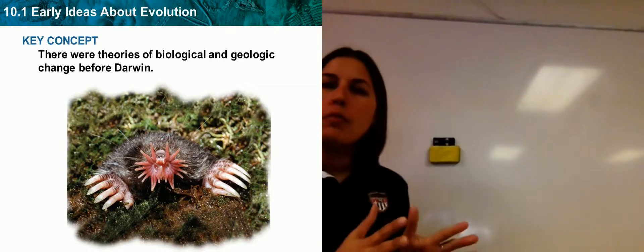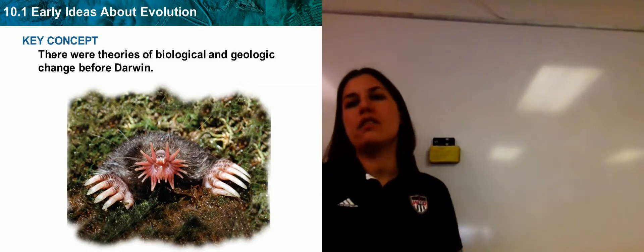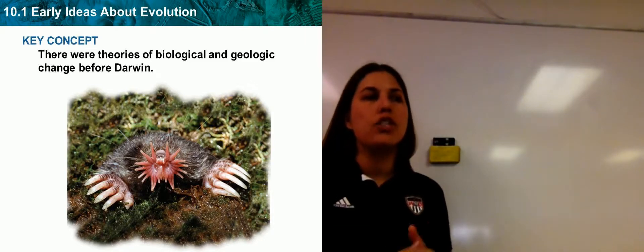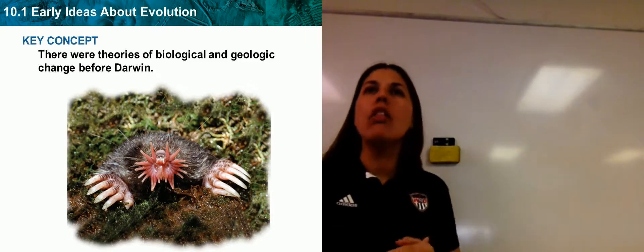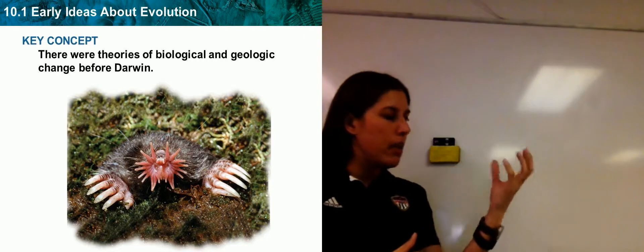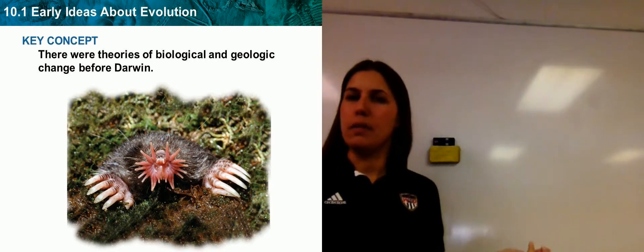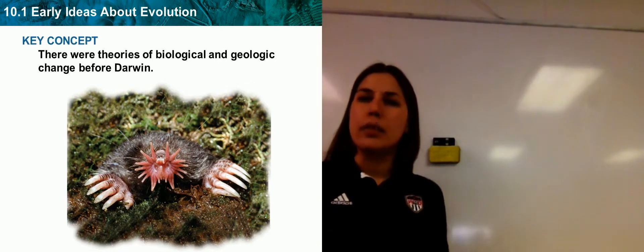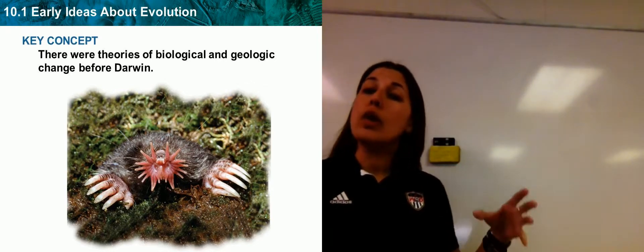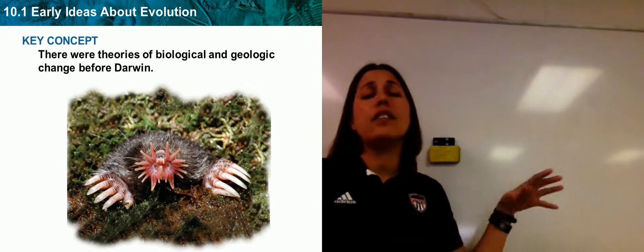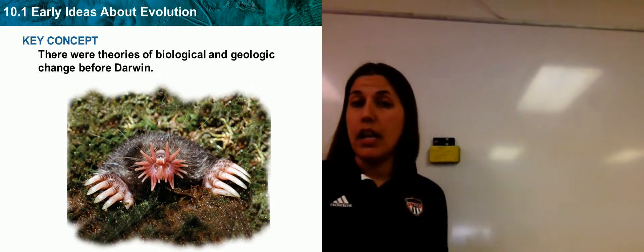Alright you guys, today we're going to talk about 10.1, which is the early ideas of evolution. Evolution meaning change over time. How did all of life start as this single microscopic organism and evolve all the way into complex humans? Now each and every one of you is going to have your own belief during chapter 10, but what we're going to present to you is all of the scientific points of view of science and evolution.